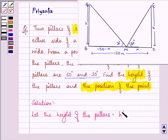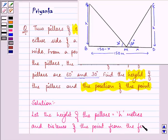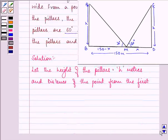And distance of the point from the first pillar, let it be CD, be X meters.